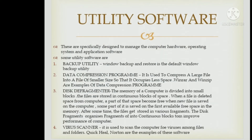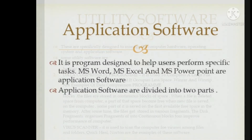Utility software is specifically designed to manage computer hardware, operating system, and application software. Some utility software include: backup utility, used for keeping backup files; compression programs, used to compress large files into smaller size; disk defragmenter, which organizes fragmented files into continuous blocks to improve computer performance; and scanners, used to scan the computer for viruses — Kaspersky and Norton are examples.